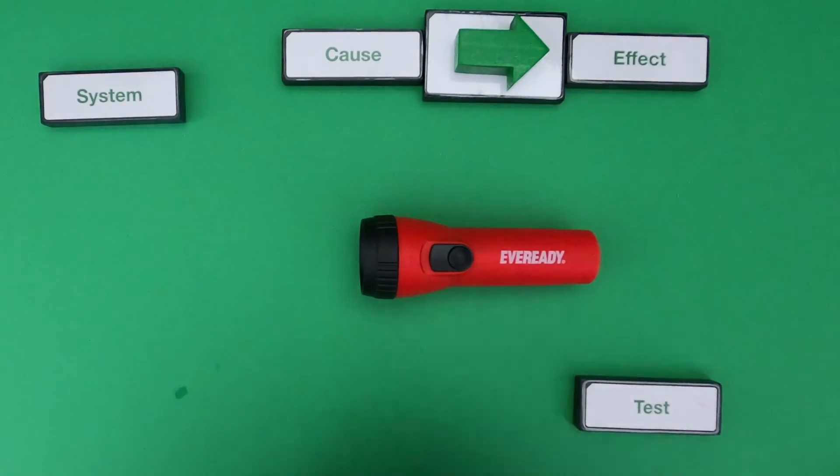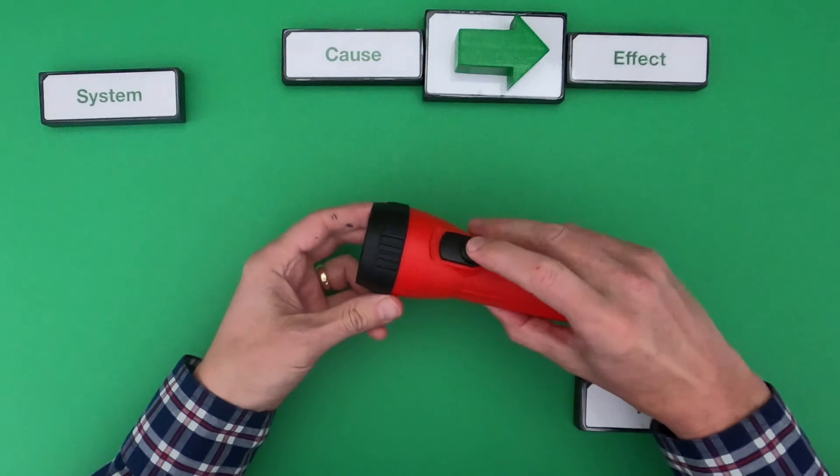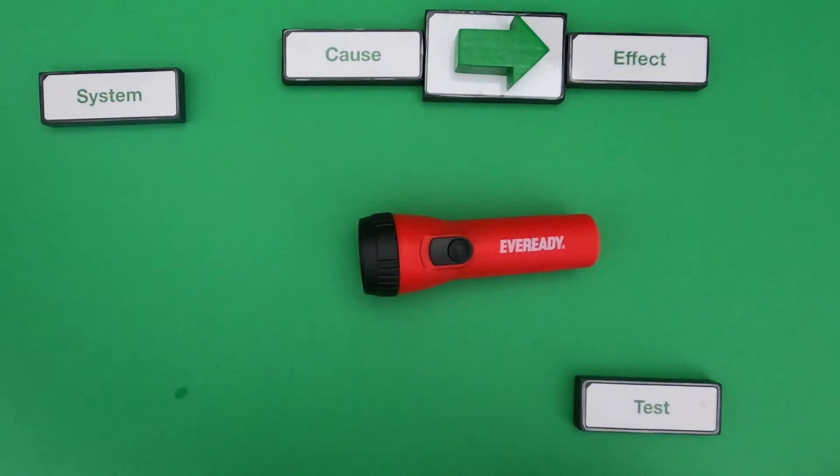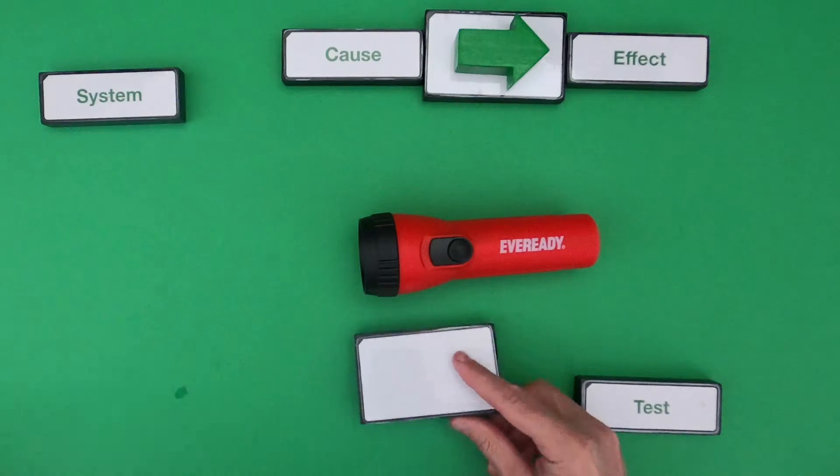So on the second system, what we have is a faulty flashlight. So when I hit the button, it's not turning on. I would determine for you what the system is.